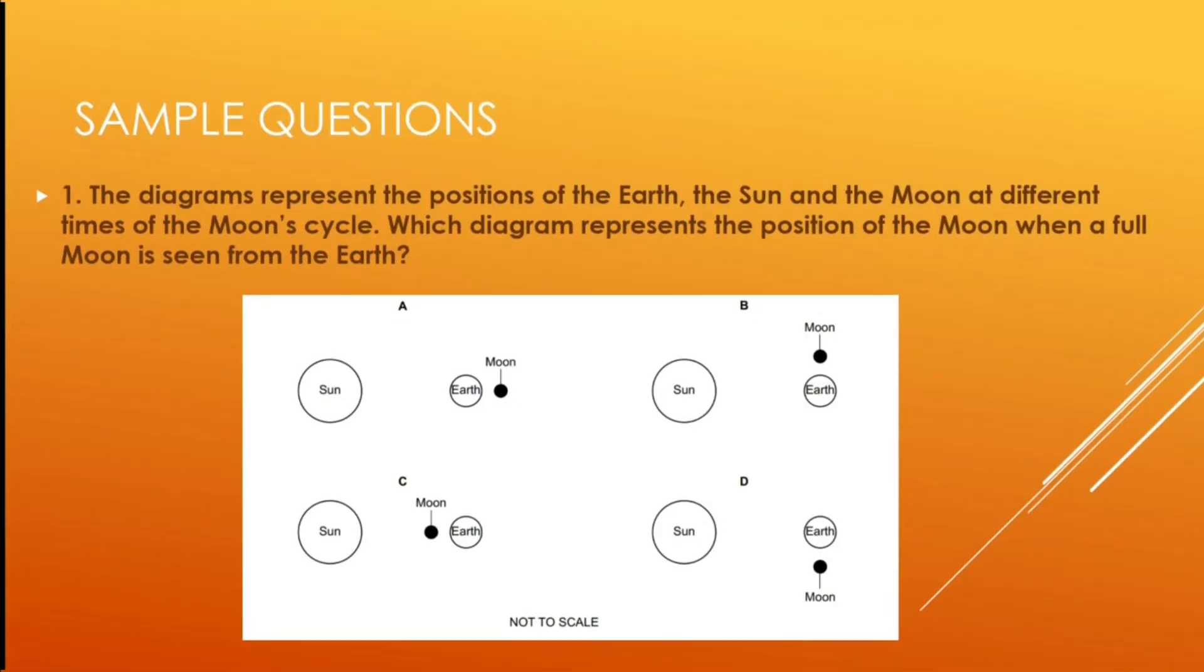And this is your first sample question. The diagram represents the position of earth, the sun and the moon at different times of moon cycle. Which diagram represents the position of the moon when a full moon is seen from the earth? And you can go through all the four options and the correct answer is answer A.